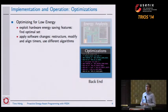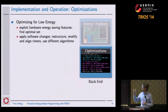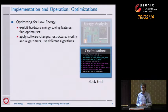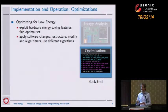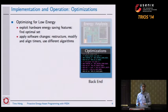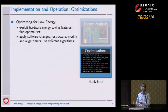At the optimization level — the second part of our back-end infrastructure — we look at what we can do to optimize source code or applications for low energy demand. The most important thing is to exploit the available hardware features implemented on the target platform, finding the optimal set. It's also up to the software to apply changes, for example restructuring the source code, modifying timers to be aligned to each other, or using different algorithms able to exploit specific functional features of the target hardware platform at an optimum.